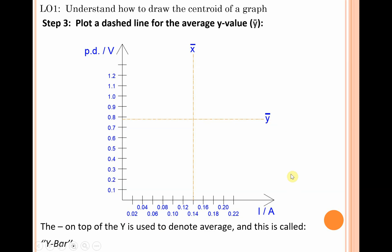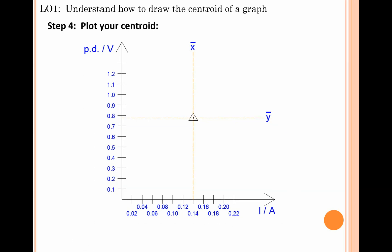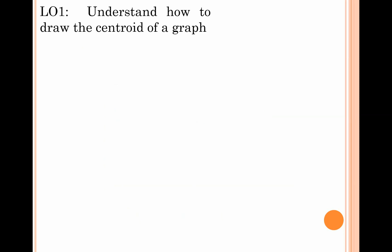Finally, where those two lines intersect each other, that's where your centroid is. Put a dot down or an X if you wish, and then put a triangle around that just to differentiate that particular point from any normal plotting point you will get on your graph. That ticks off the requirements of the first learning objective - you now understand how to draw the centroid of a graph.